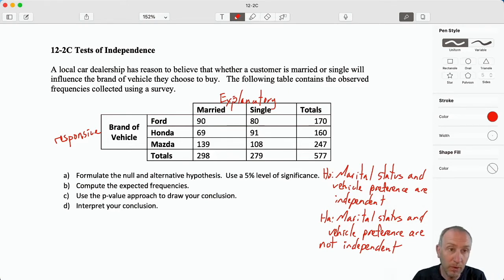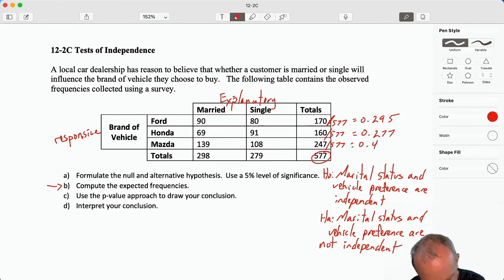The first step, once we've got that test laid out, is now to calculate our test statistic which involves those expected frequencies. So I want to know these common proportions: 160 divided by 577, 170 divided by 577. I'm dividing everything by that total because that's what we would expect those proportions to be if the null were true.